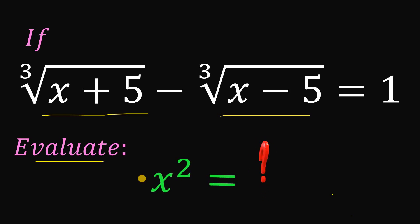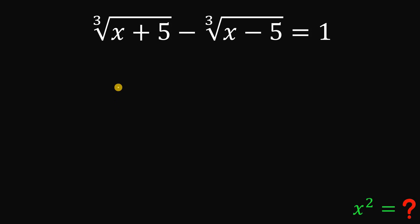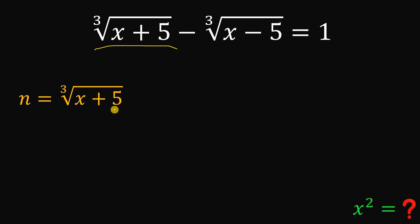Now let's see if you got the correct answer. To answer this question from the Philippine Mathematical Olympiad, we're going to use pure algebra. One possible solution is to replace cube root of (x plus 5) and cube root of (x minus 5) with some variables. Let n be equal to cube root of (x plus 5) and m be equal to cube root of (x minus 5).